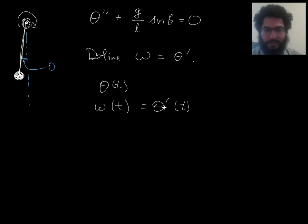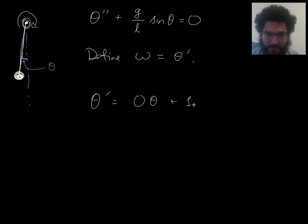And by the way, this is one of our two differential equations. So let me write it in the other order: theta prime equals omega, so equals zero theta plus one omega, you see. And then our second differential equation is omega prime equals—and then what's omega prime? Well, omega is theta prime, so omega prime is theta prime prime, which equals—move this to the other side—equals negative g over l sine theta.